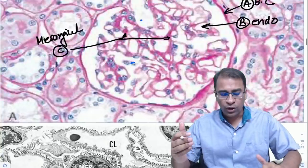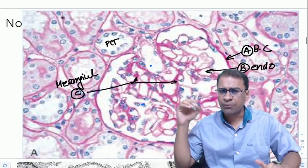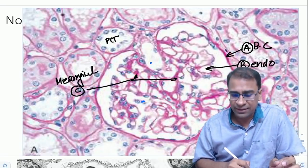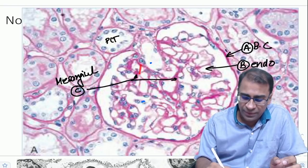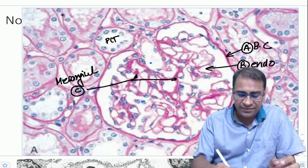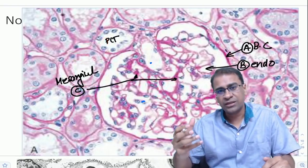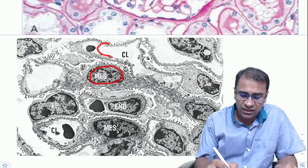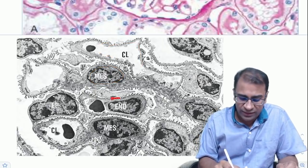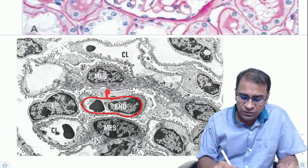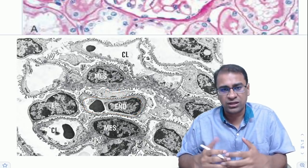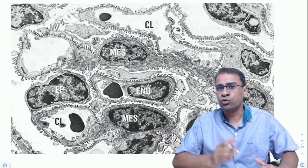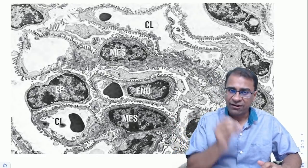Now let's look at a normal glomerulus in more detail. You can see the parietal cell, all the capillaries, and the mesangial areas — that pink area. On electron microscopy the same features are seen: mesangial areas, capillary areas, endothelial areas, and above these the podocytes arranged like foot processes around the cells.